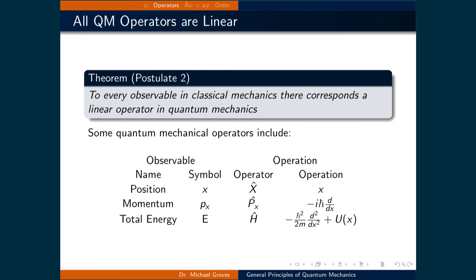This leads us to our second postulate. To every observable in classical mechanics, there corresponds a linear operator in quantum mechanics. We just covered what it means for an operator to be linear. The other part to this postulate, that every observable in classical mechanics has a corresponding quantum mechanical operator, is what allows us to measure quantities in quantum mechanical systems. Quantum mechanics wouldn't be very useful if we couldn't extract measurable quantities, because there would be no predictive power behind the theory. I've only listed three operators and their classical observables here. However, we will come across more as we move through the course.